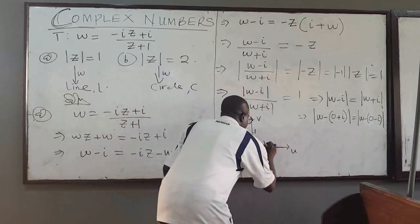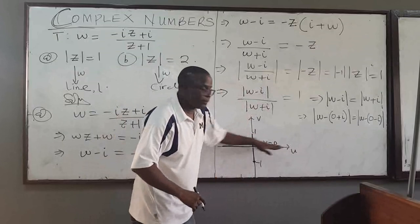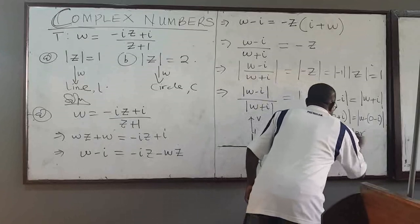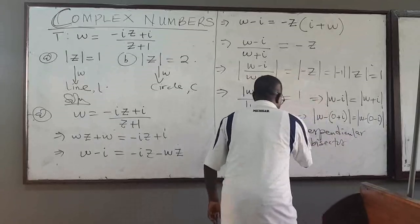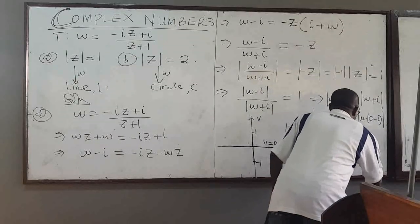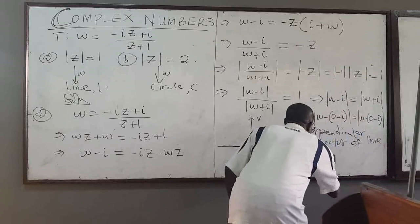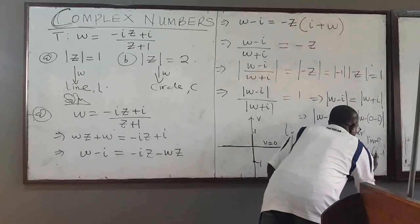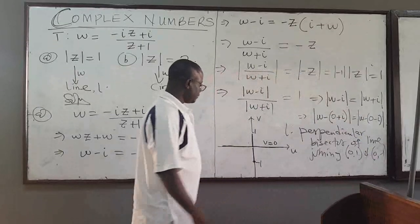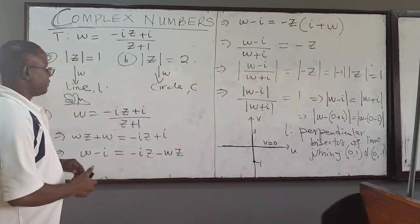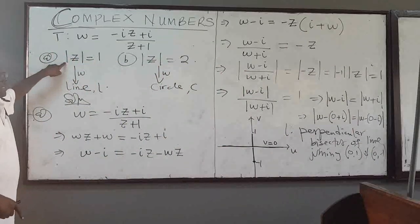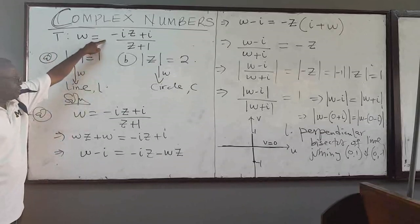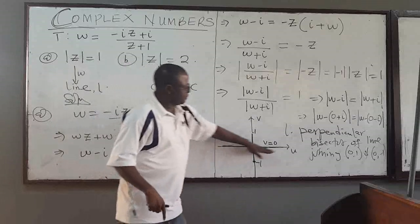That line is just V = 0, like y = 0 — that's this line. So line L is a perpendicular bisector of the line joining the point (0, 1) and (0, -1). The sketch is given by this. So basically we have solved part A. In the Z plane it's a circle, center 0 and radius 1. But when you transform it using this transformation, it moves from a circle to the boundary line.